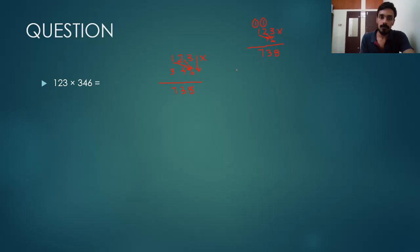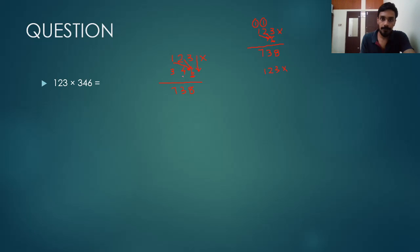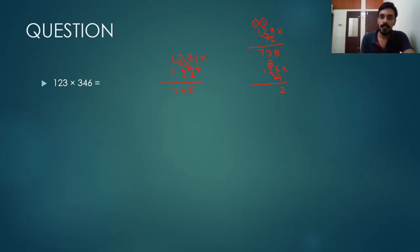In the second step, we multiply 123 by the tens place digit 4. So 3 times 4 is 12 — we write 2 in the ones place and carry 1.